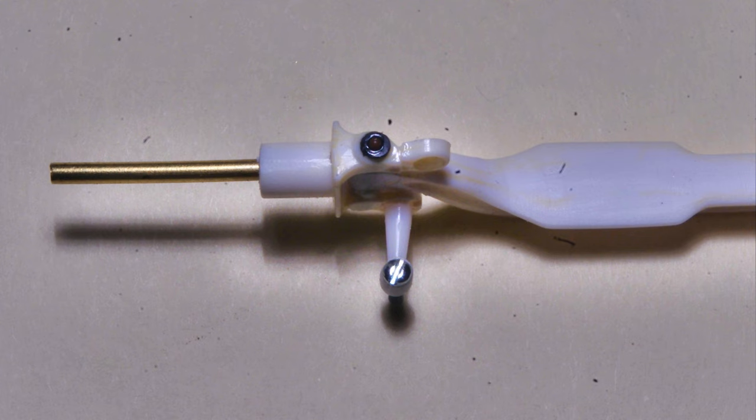This closer view shows a styrene disc punched from .010 black styrene, glued in place above the kingpin hole. By doing this top and bottom, the kingpin is trapped in place and can still pivot freely. I've also used a .025 styrene rivet to represent a grease fitting.